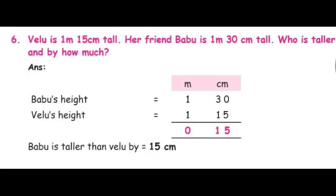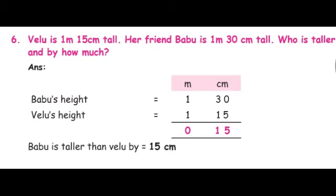Shall we do one more sum? Question number 6. Veilu is 1 meter 15 centimeters tall and his friend Babu is 1 meter 30 centimeters tall. Who is taller and by how much? Veilu and his friend are both standing together and we are measuring their height. Veilu is 1 meter 15 centimeters and his friend is 1 meter 30 centimeters.